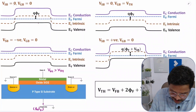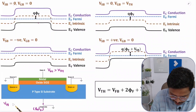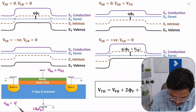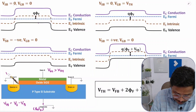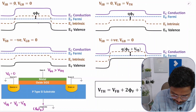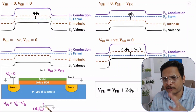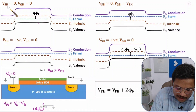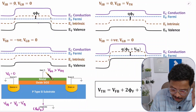In the first case, VSB voltage is zero. VSB is the voltage between source and body, that is VS minus VB. Since the source terminal is at zero voltage, VSB equals minus VB. For this case VSB is zero and VGB is zero, meaning the voltage at the gate is zero.